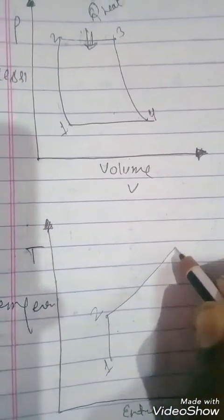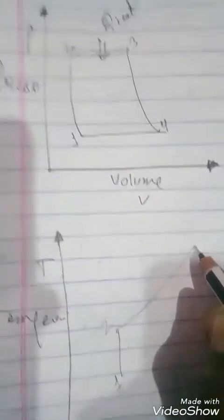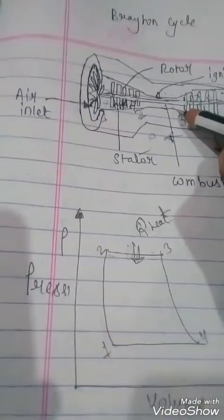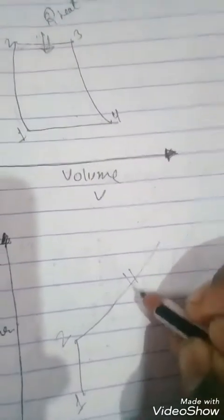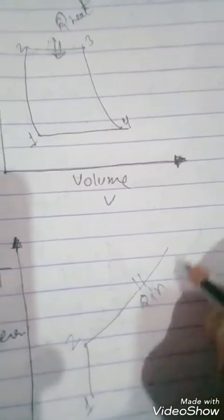Two to three is the constant pressure. Pressure remains constant from two to three, but we are providing some amount of heat in it. Q in.